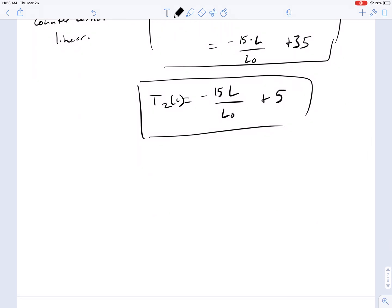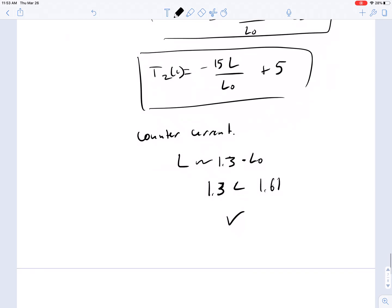And similarly, when you do this, you get the counter-current exchanger gives us an L of about 1.3 times L0. 1.3 is less than 1.61, so it's a more efficient heat exchanger.